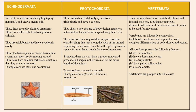Next is Echinodermata. In Greek, 'echinos' means hedgehog — a spiny mammal — and 'derma' means skin, so these are spiny-skinned organisms. They are free-living marine animals, triploblastic, and having a coelomic cavity. They also have a peculiar water-driven tube system used for moving around, and hard calcium carbonate structures used as a skeleton. Examples are sea stars and sea urchins.